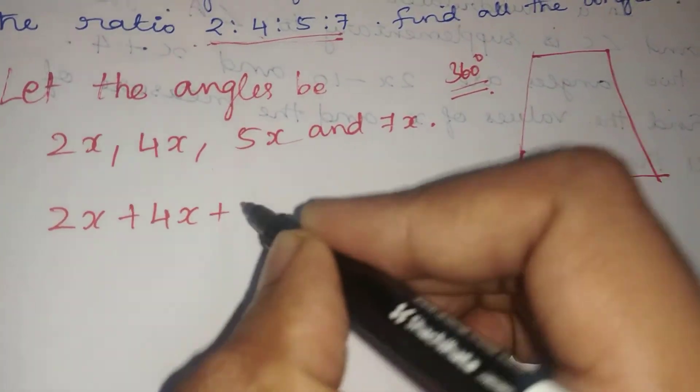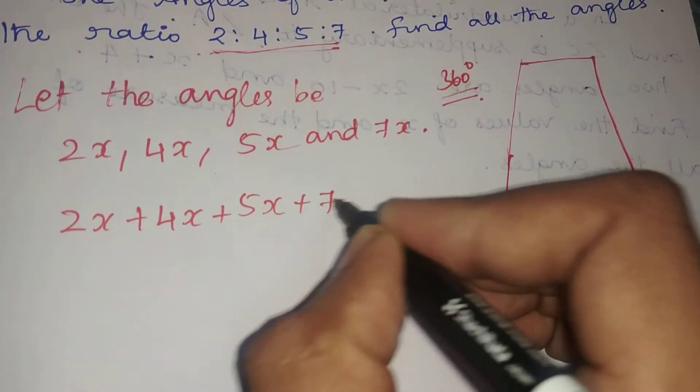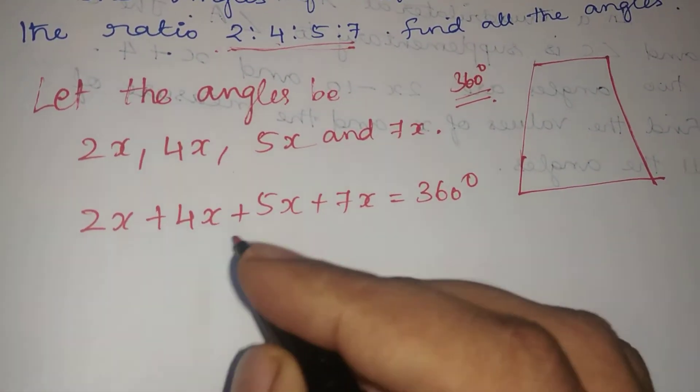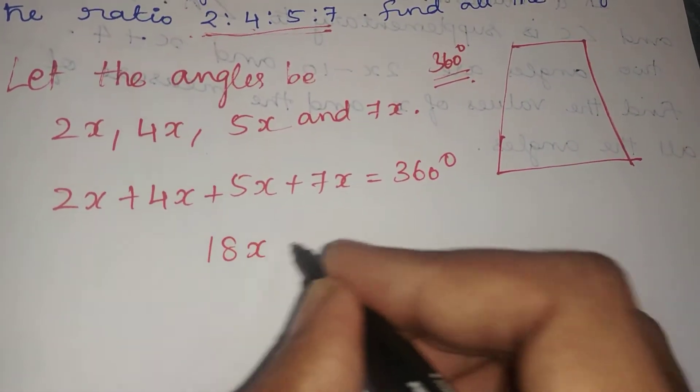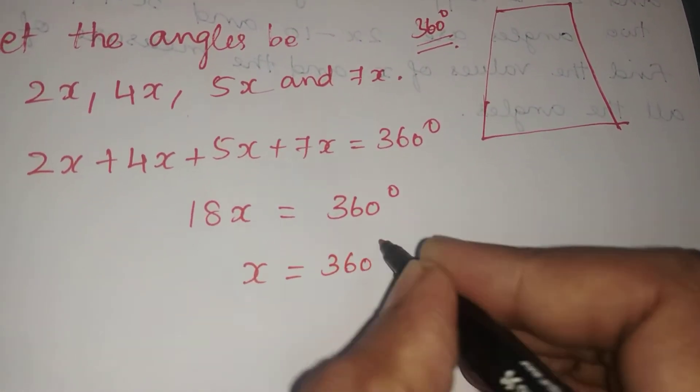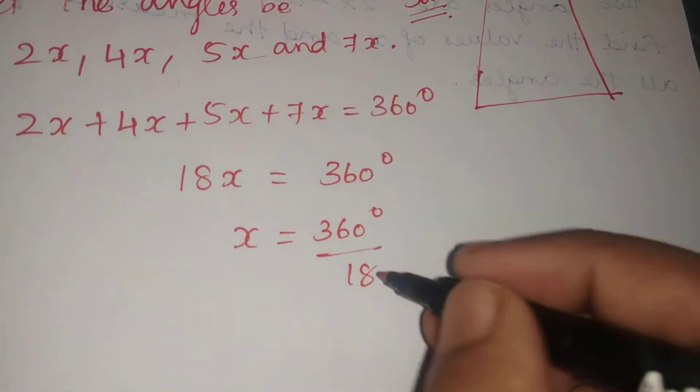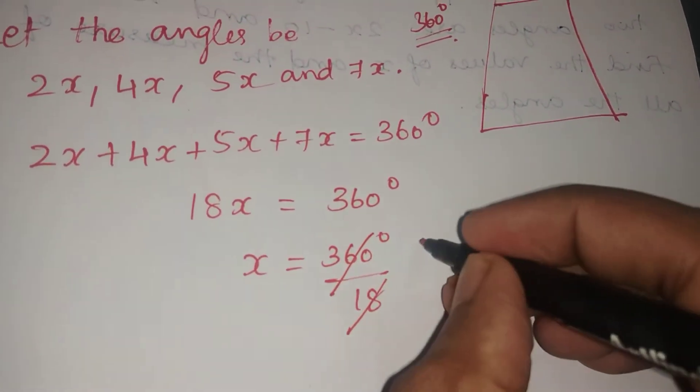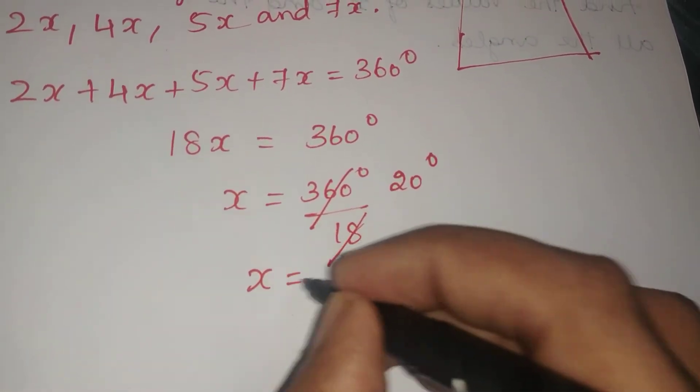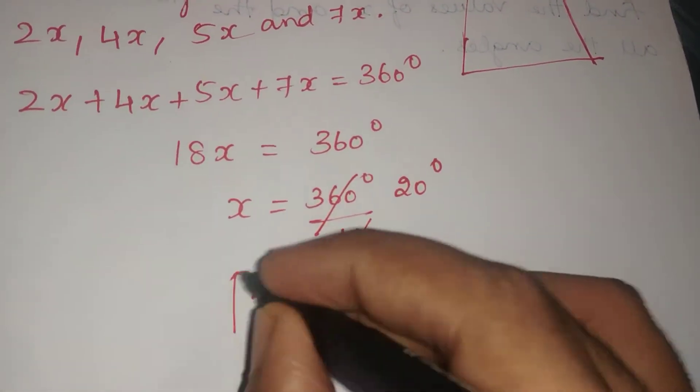2X plus 4X plus 5X plus 7X equals 360 degrees. Adding, we get 18X equals 360 degrees. X equals 360 degrees divided by 18, so X equals 20 degrees.